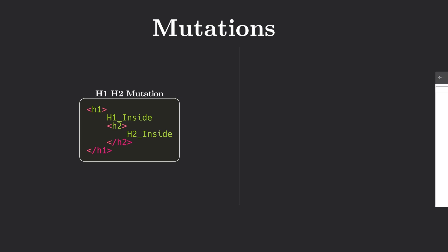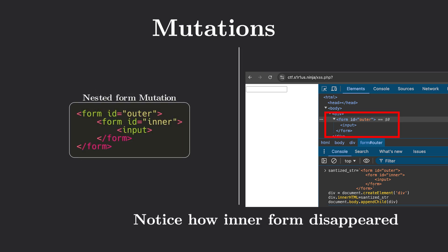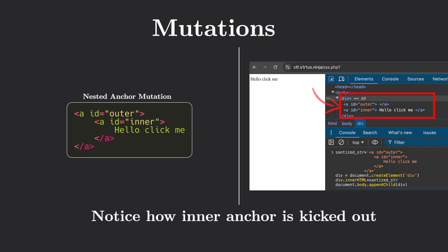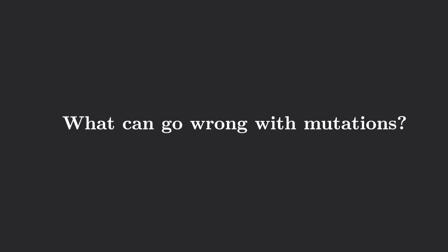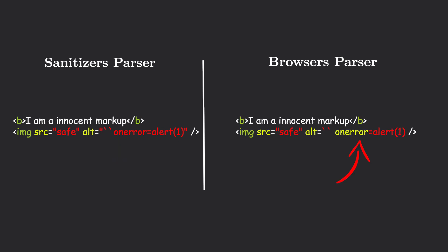There are many examples of mutations in the HTML specification. A form tag inside a forms tag is not allowed, so the parser fully removes the nested form tag. An anchor tag inside an anchor tag is not allowed, so the nested anchor tag is kicked out. If an attribute value doesn't have quotes, the browser parser adds them automatically. These are only a few, and there are many more. The key problem: if the sanitizer parses HTML one way but the browser parser handles it differently, you end up with parsing differentials — and that's where the vulnerabilities sneak in.